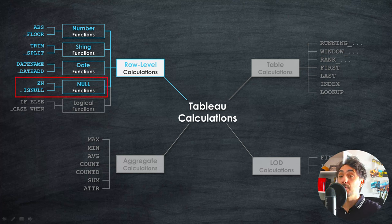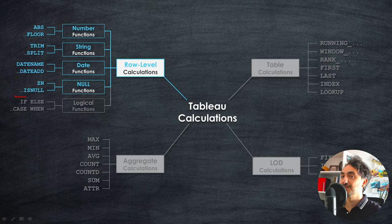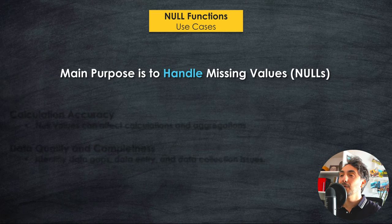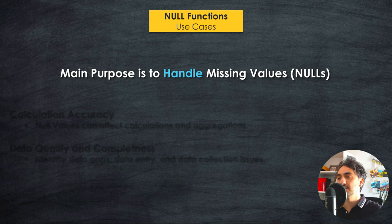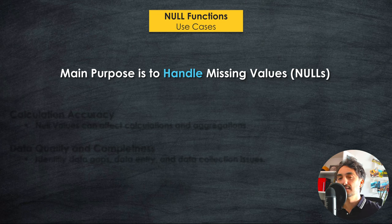Now we're going to focus on another group of functions under the category raw level calculations: the null functions. The main purpose of null functions in Tableau is to handle and manipulate missing values in our data. We can have missing values like everywhere — in text, dates, numbers — any field in our data source can have missing values.